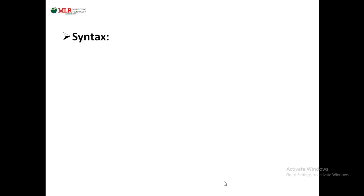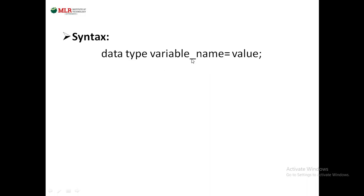Coming to syntax: if you want to declare any variable you must specify the data type, then the variable name, and then equals to value. This equals sign is nothing but the assignment operator. For example, int a equals to 10 — this 10 will be assigned to a by the assignment operator, which assigns the right side value to the left side.